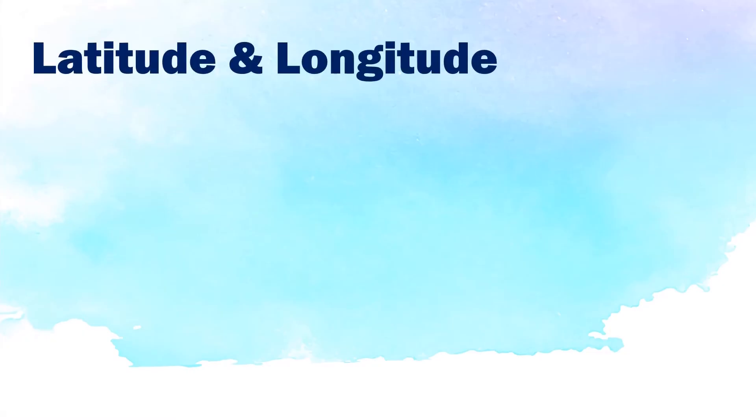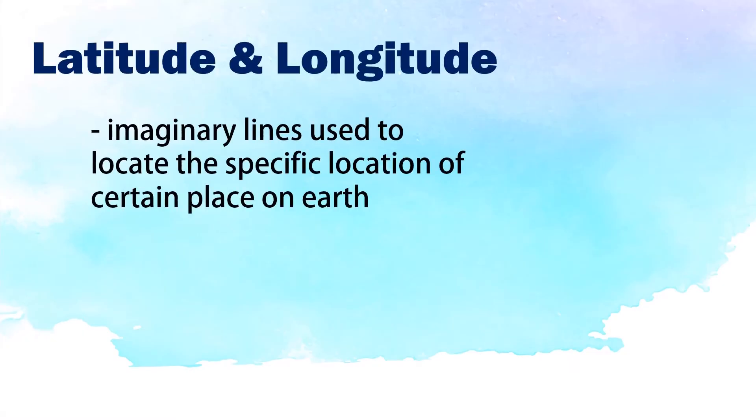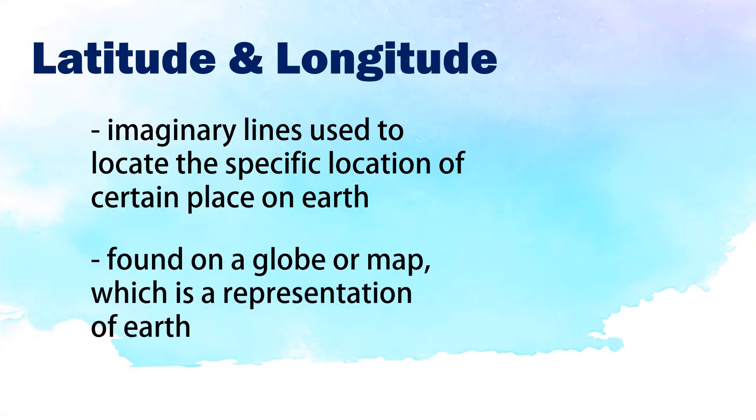Latitude and longitude are imaginary lines used to locate the specific location of a certain place on Earth. They can be found on a globe or map, which is a representation of Earth.